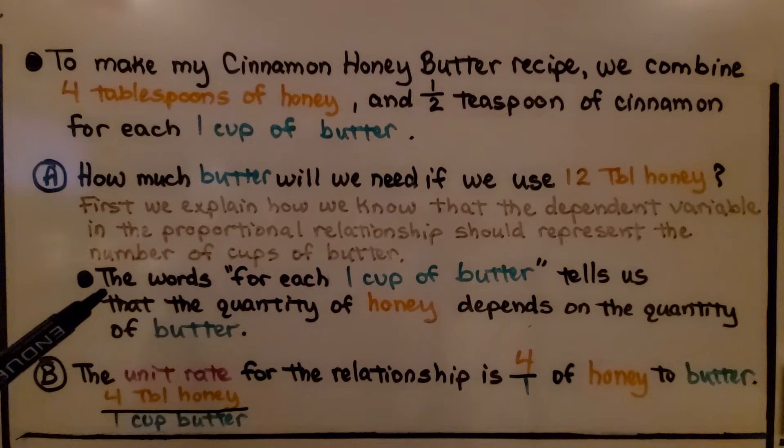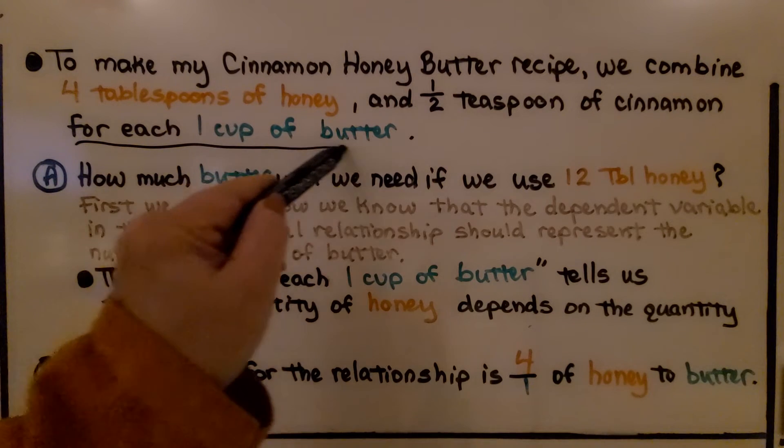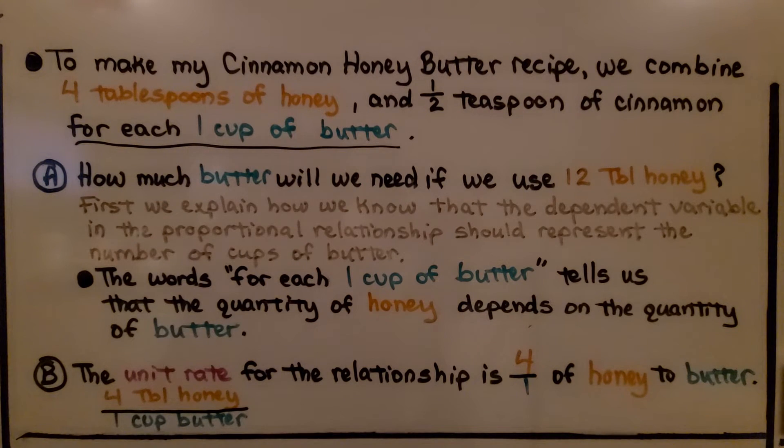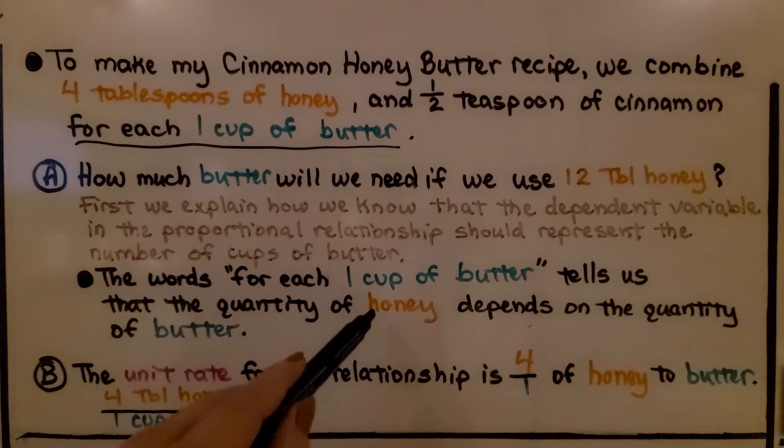The words 'for each one cup of butter' right here tells us the quantity of honey depends on the quantity of butter. So that means the honey is the dependent variable.